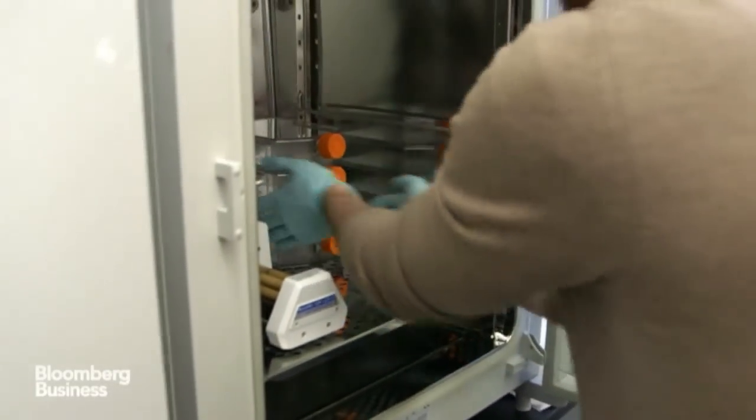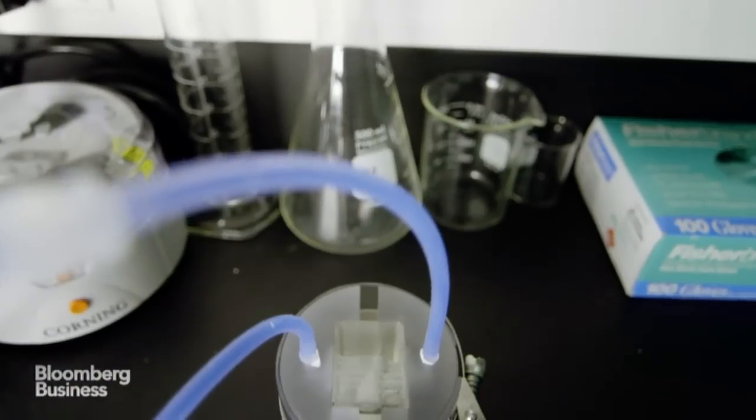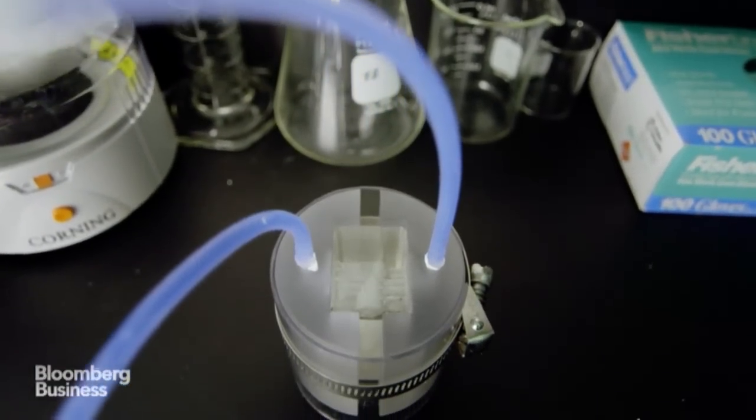Regenerative medicine relies on three things: stem cells, scaffolds, and bioreactors. You need to have the right stem cell source, and then we need to put those cells into something that helps them understand how to differentiate, what to become.